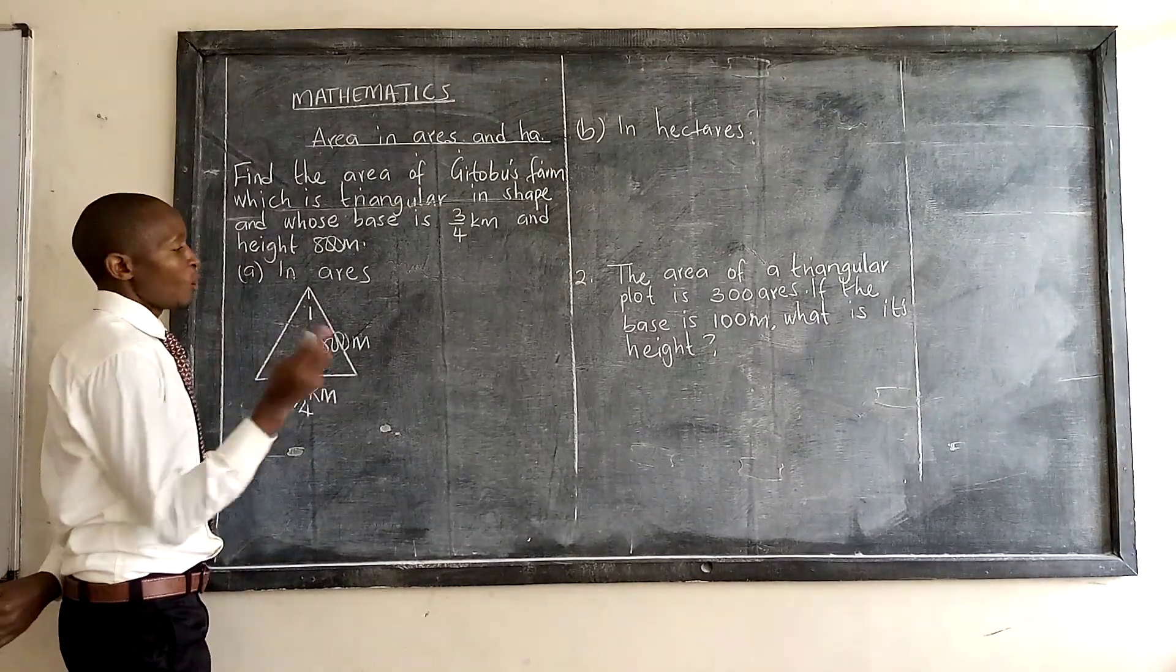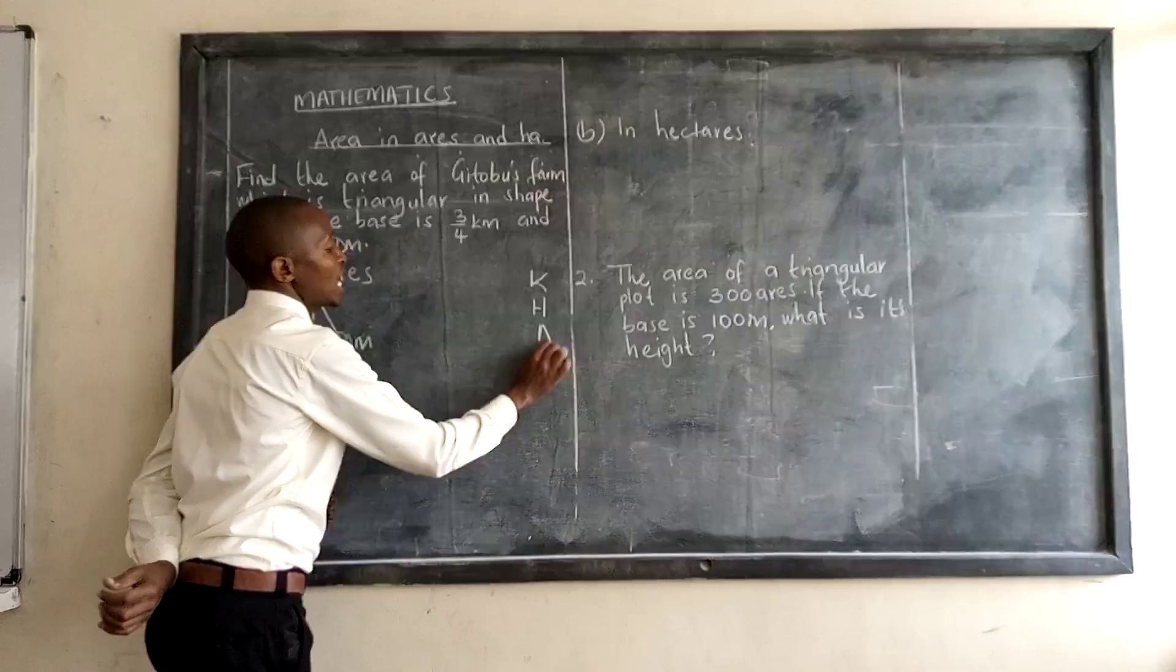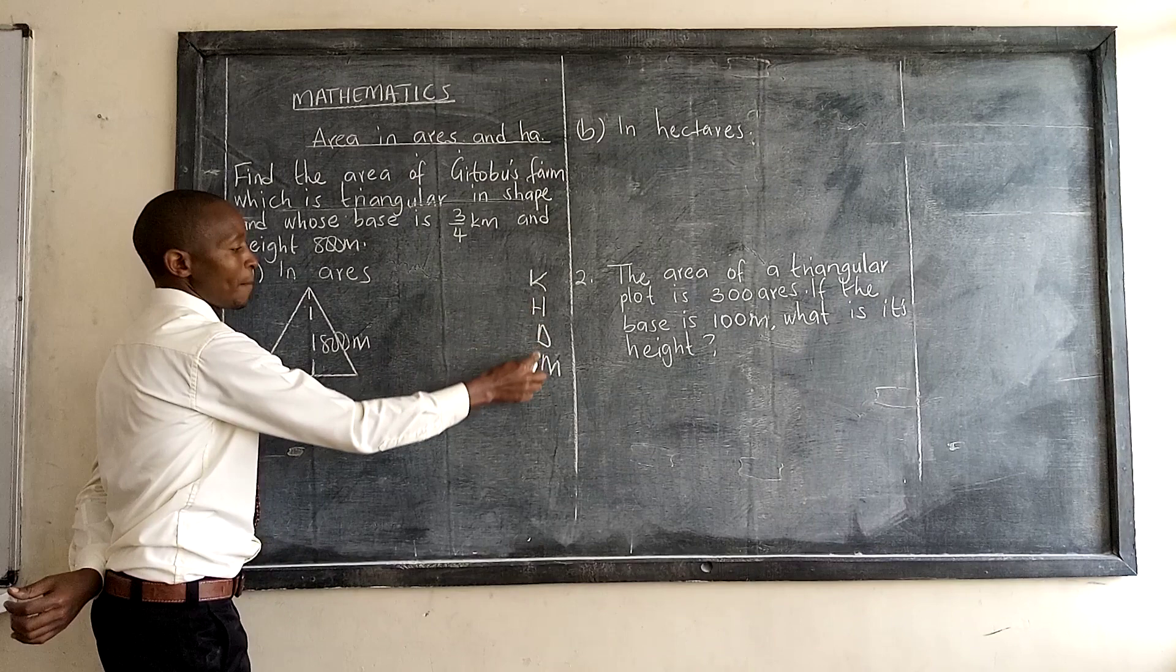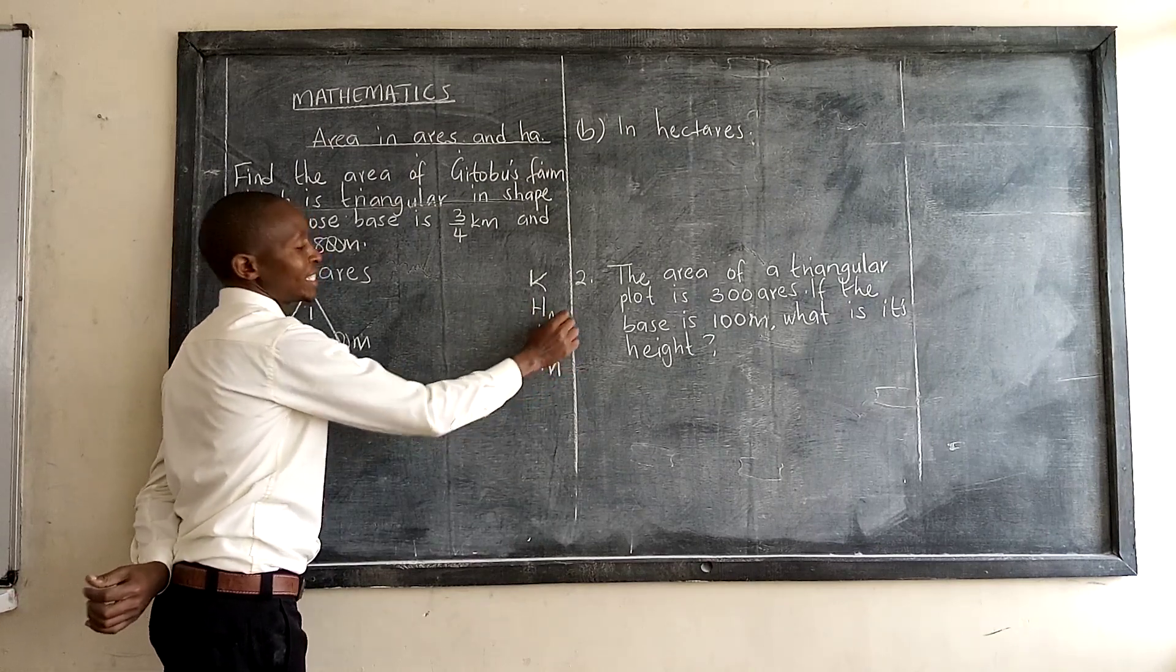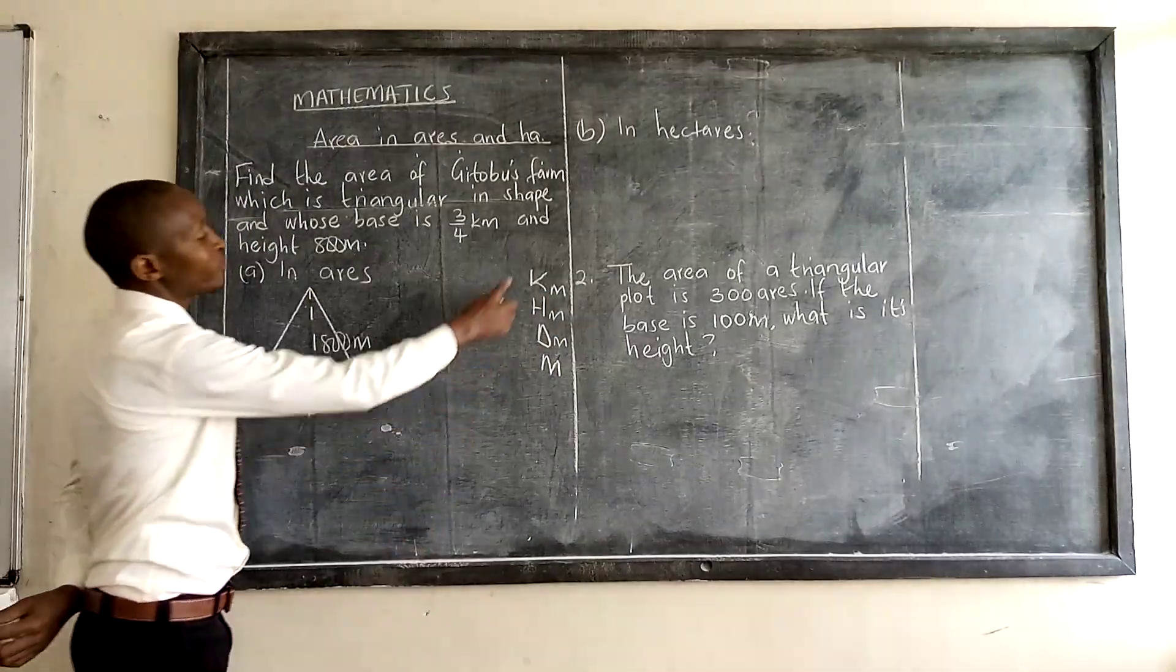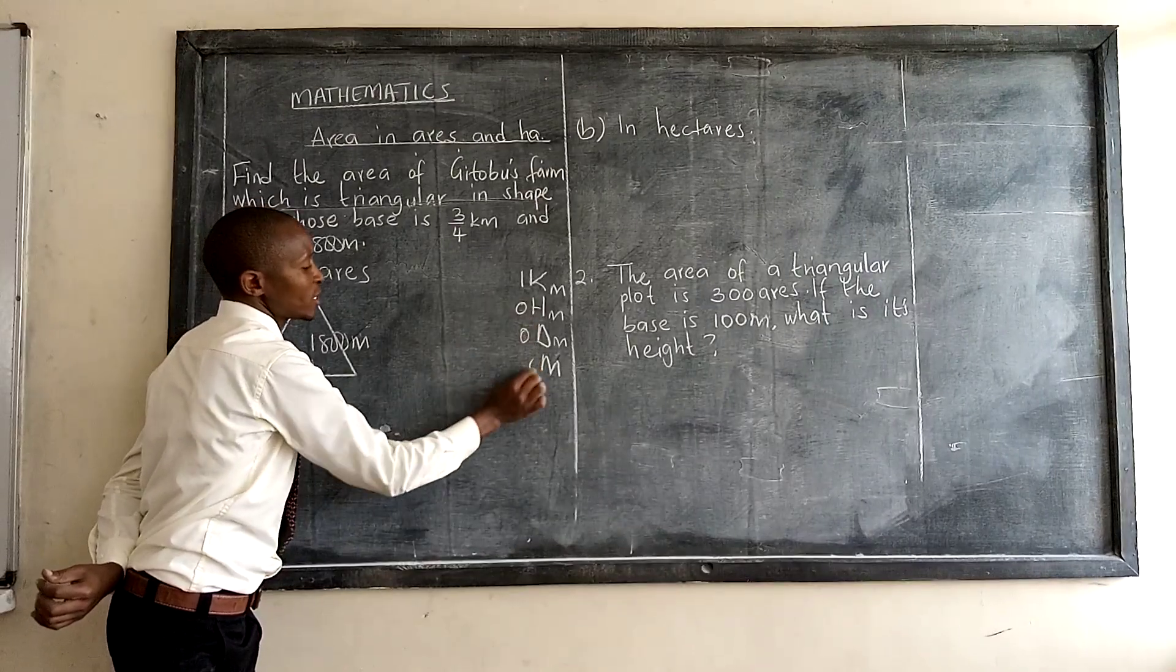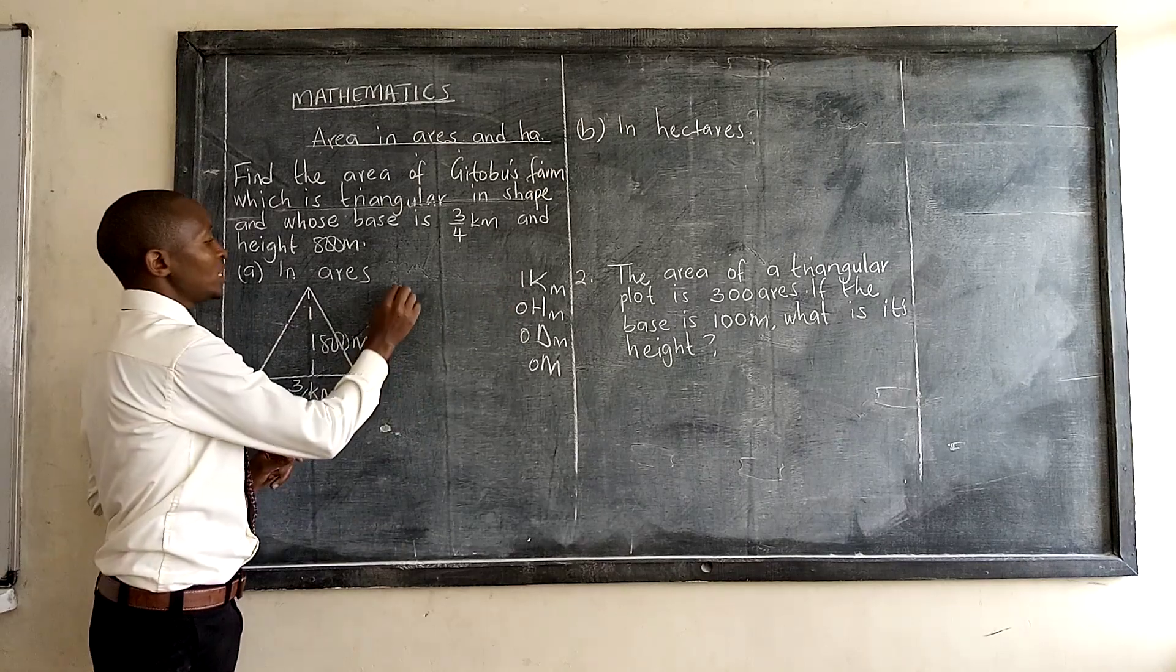One kilometer is equal to how many meters? We can use this Kenya has dark mnemonic. We need up to meters. Kenya has dark meaning: this is meter, this is decameter, that is hectometer, and that is kilometer. We need from kilometer up to meters. We just put one, then we have zeros up to our air. This means that one kilometer...